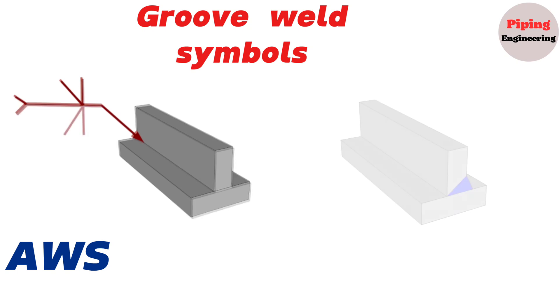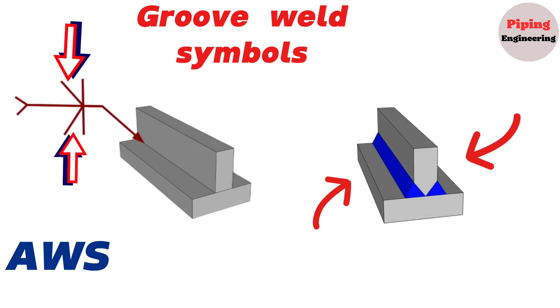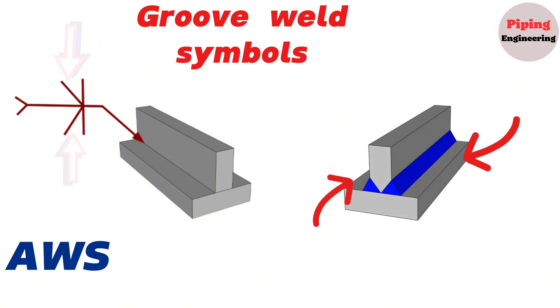When groove welding symbols are showing on both sides of the reference line, it is called a double groove weld and the weld is carried out on both sides of the joint.